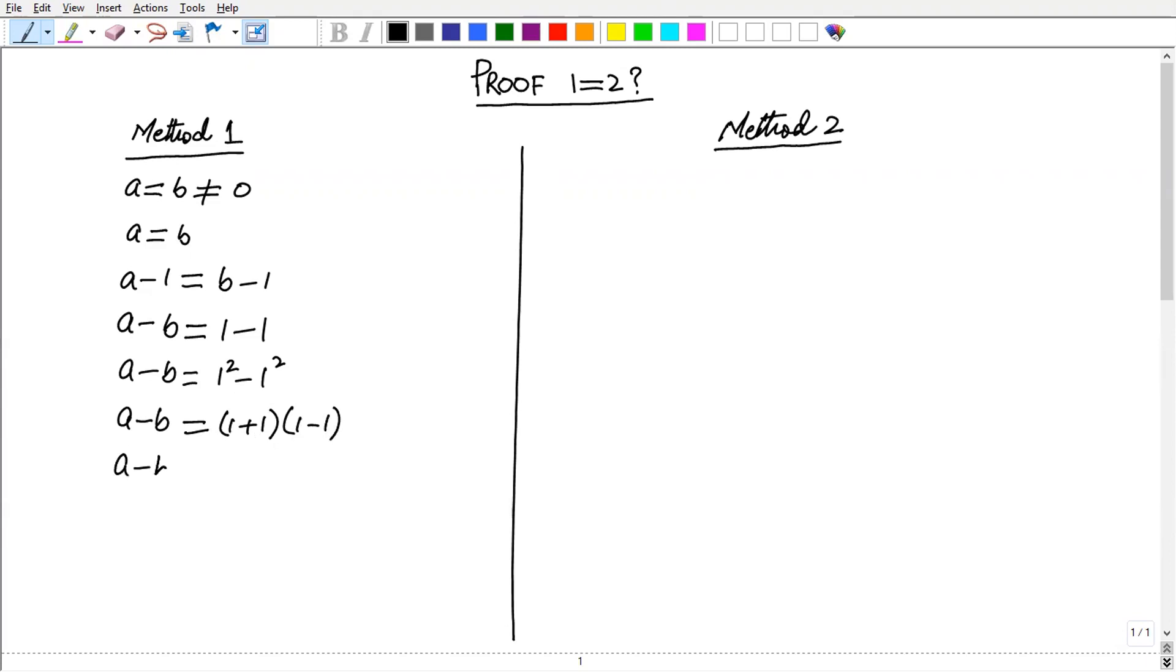So A minus B equals 1 plus 1 is 2, and 1 minus 1 is A minus B from here. So we can put A minus B here.